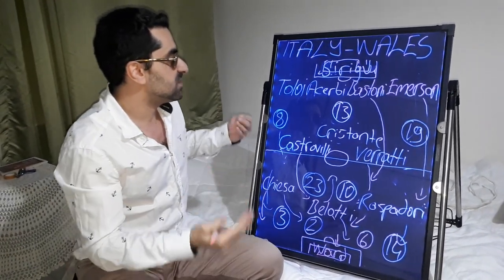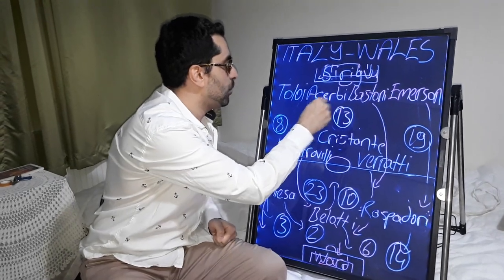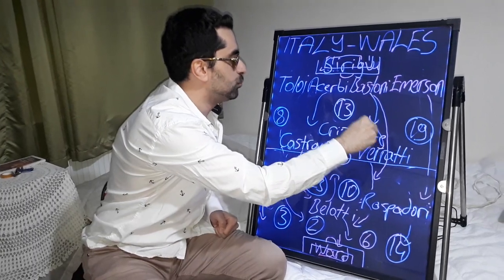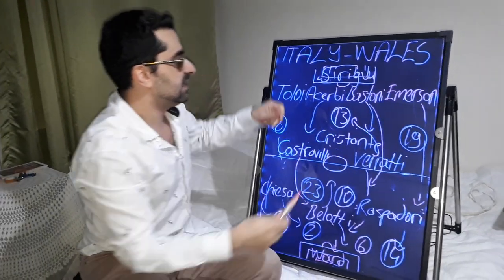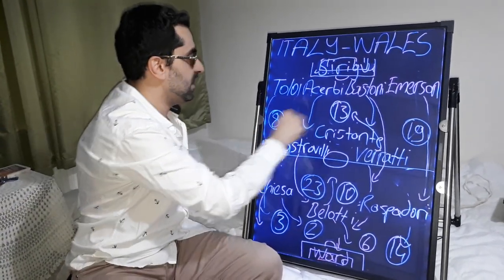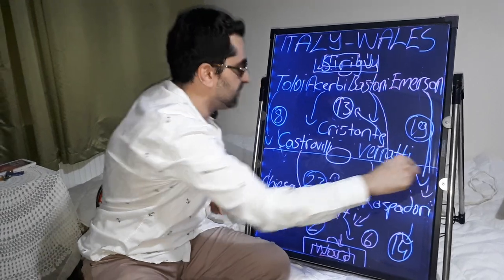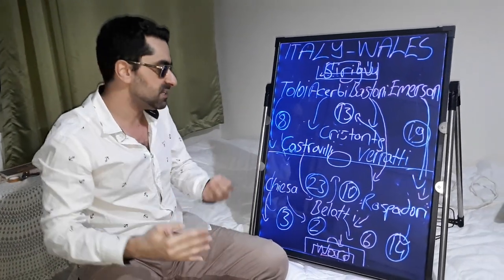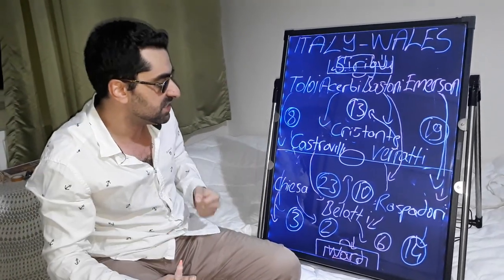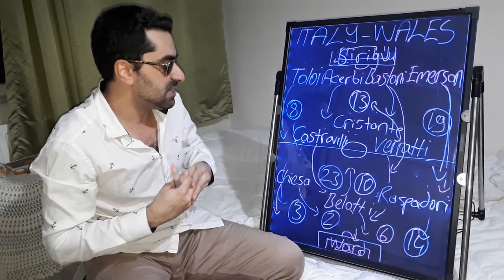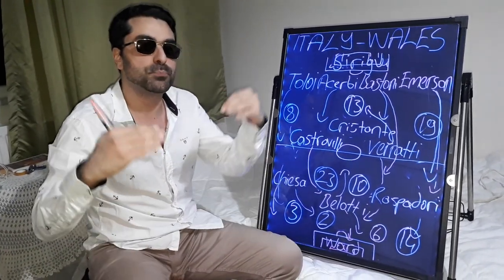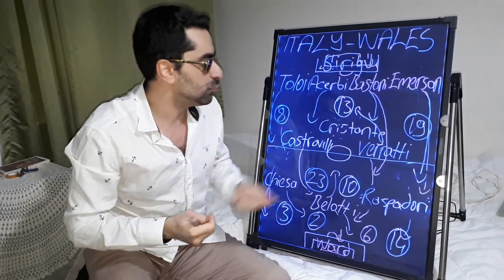In the last minutes of the game, Italy's centre-backs came close to midfield and Verratti moved deeper, coming back between Acerbi and Bastoni. Toloi and Emerson moved higher to support the attacks. Chiesa found one more goal position but missed it. The game finished 1-0, and Italy collected 9 points in 3 games, advancing to the last 16 of Euro 2020.